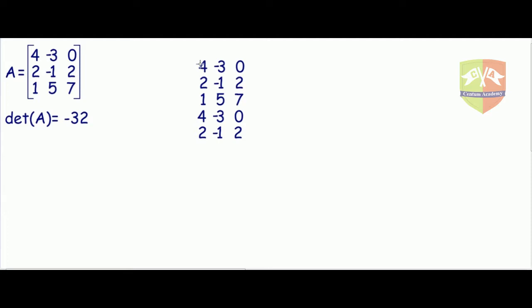Now just take the elements which fall on this particular line and write the product down here. So let's say these are three elements, the product here is 4 into minus 1 into 7 which is minus 28.